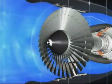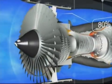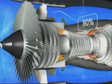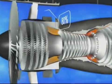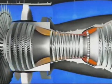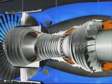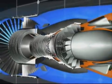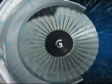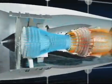The CFM56 is a high bypass ratio engine. The primary flow passes through the combustor, while the secondary flow passes only through the fan. 80% of the engine air flow accelerated by the fan is directed into the bypass duct and provides 80% of the engine's thrust. The primary flow passes in succession through the compressors, the combustor and the turbines, before being ejected rearwards through the exhaust assembly.